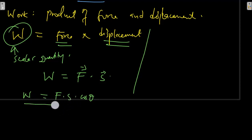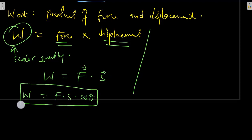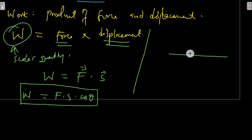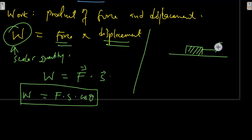So, when do we say that work done is negative or the work done is positive? Let's use this mathematical definition of work to explain how that comes about. Let us consider a surface with an object lying on it. Let's assume we are applying a force F in this direction — this is the applied force.